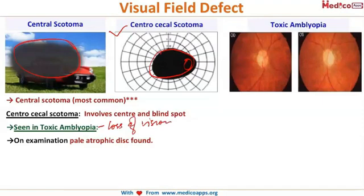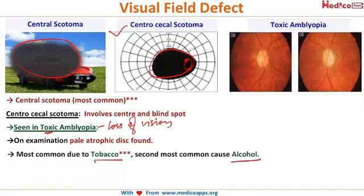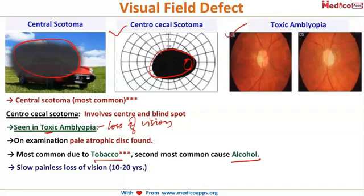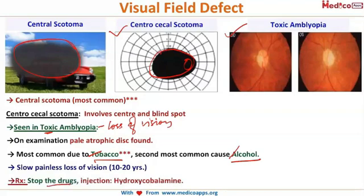Toxic amblyopia refers to loss of vision due to consumption of toxic substances such as tobacco and alcohol, hence also called tobacco amblyopia. The optic disc appears strikingly pale and atrophic. The distinguishing feature from optic neuritis is that this is a slow, painless loss of vision, as opposed to the sudden painful loss in optic neuritis. Management involves withdrawal of the toxic substance along with injection hydroxycobalamin.